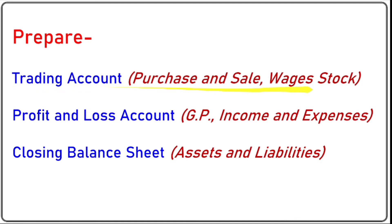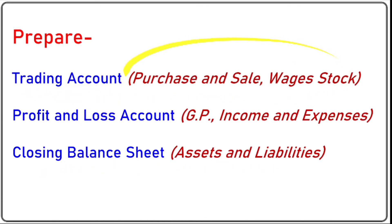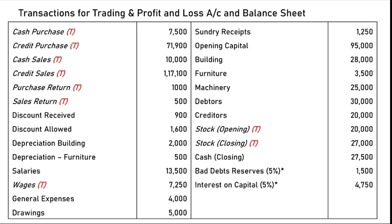Now let's prepare the trading account and profit and loss account. For the trading account: debit side has opening stock, purchases (cash purchase + credit purchase − purchase return = total 78,400), wages. Credit side has sales (cash sales + credit sales − sales return = 1,26,600) and closing stock. These five components form the trading account. For the profit and loss account: discount received and sundry receipts are income; discount allowed, depreciation, salaries, general expenses, bad debt reserve, and interest on capital are expenses.